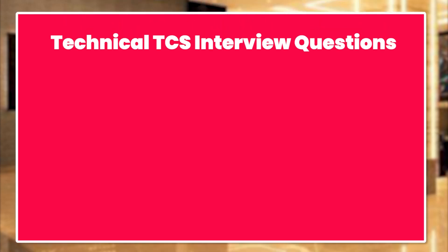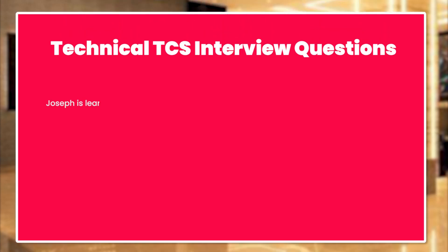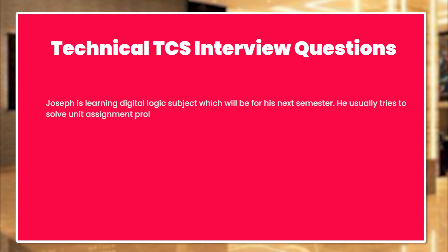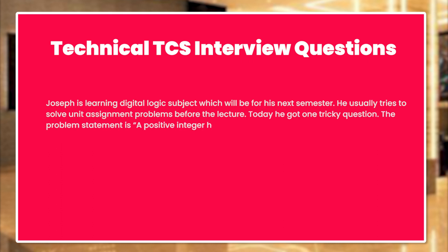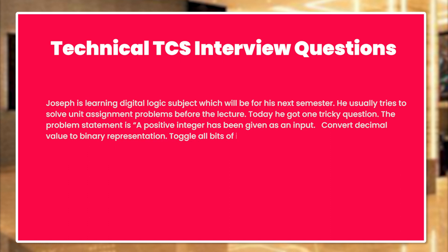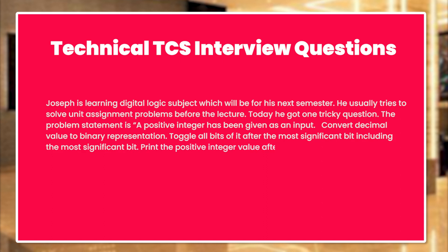Let's take a look at a few questions now. Joseph is learning digital logic subject which will be for his next semester. He usually tries to solve unit assignment problems before the lecture. Today he got one tricky question. The problem statement is: a positive integer has been given as an input. Convert the decimal value to binary representation. Toggle all bits of it after the most significant bit, including the most significant bit. Print the positive integer value after toggling all bits.